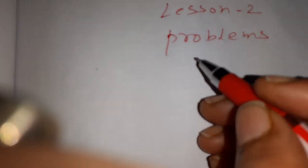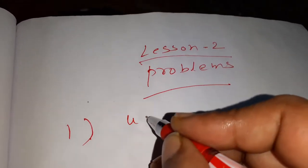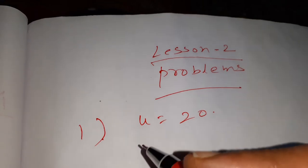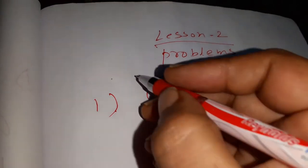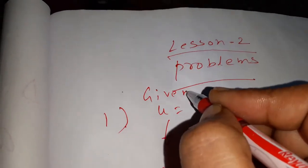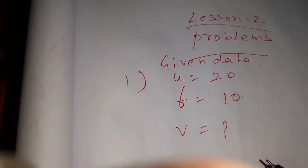Good morning children. Today we are going to do lesson 2 problems. Already in this lesson we had completed the full lesson, only the problems are left that I am going to teach you now. The first problem: the object is placed at a distance 20 cm and the focal length of the lens is 10 cm. They ask you to find out the image distance. This is the given data. From this you are going to find the image distance.